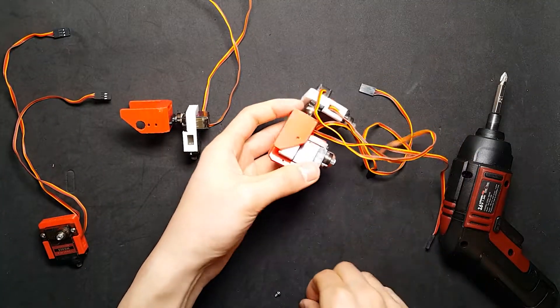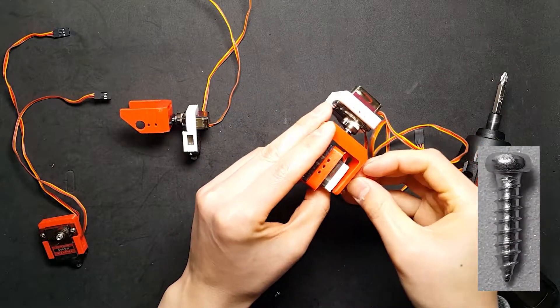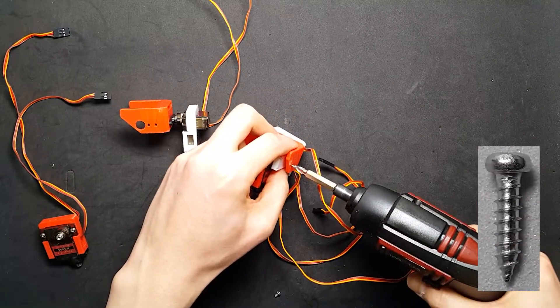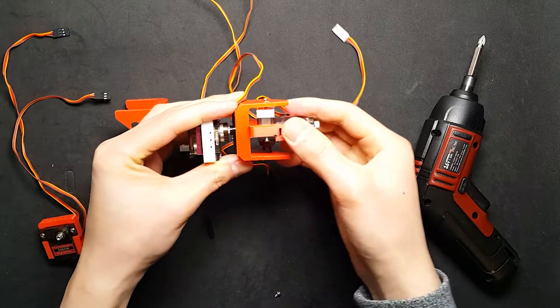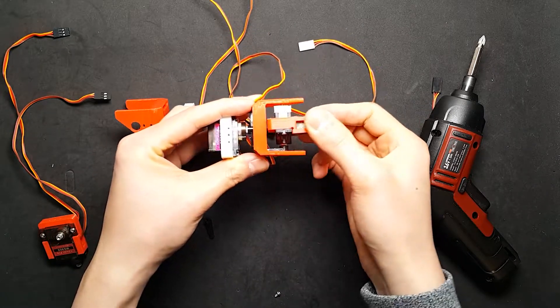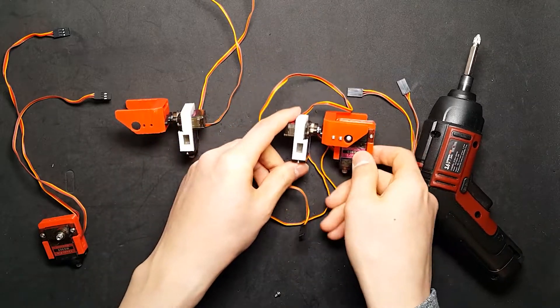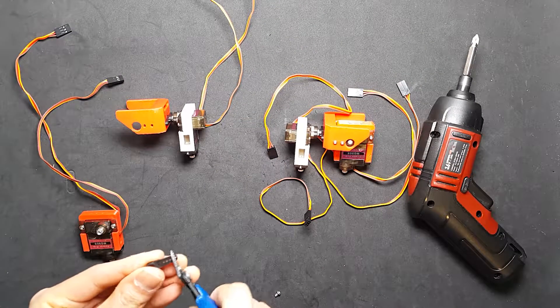When fixing the opposite side of the motor drive shaft, do not turn it all the way. Just fix slightly. Normally, bearings are supposed to be here, but this kind of small size robot is enough with this technique.